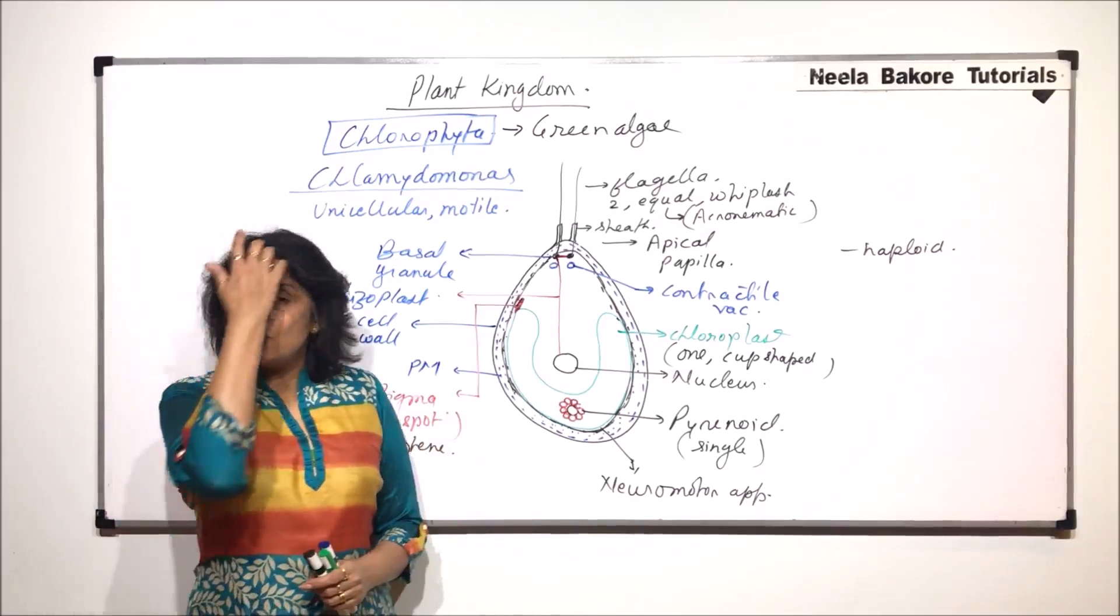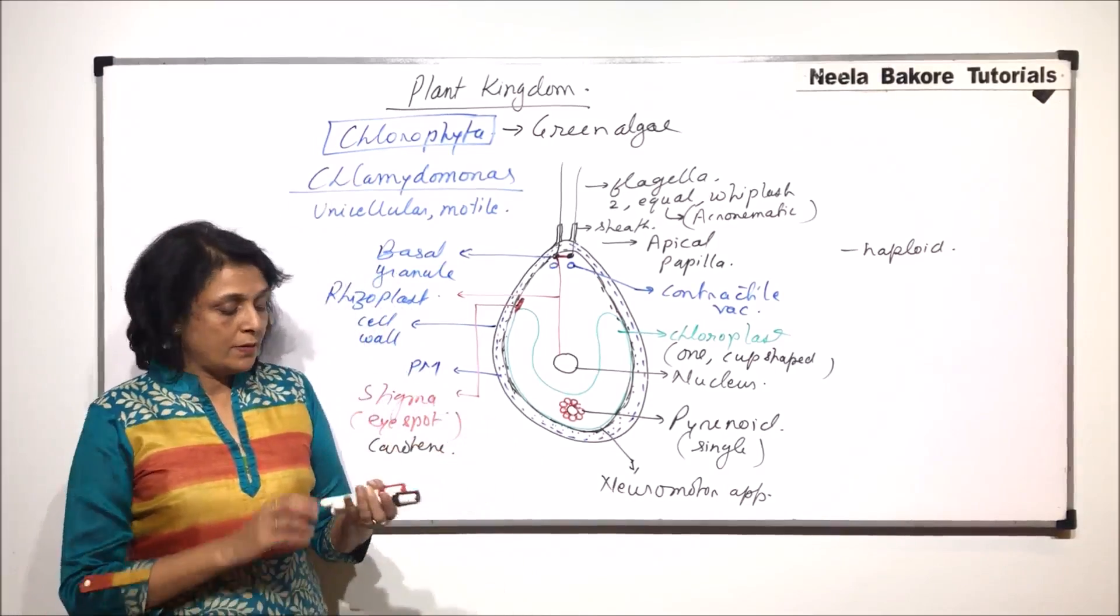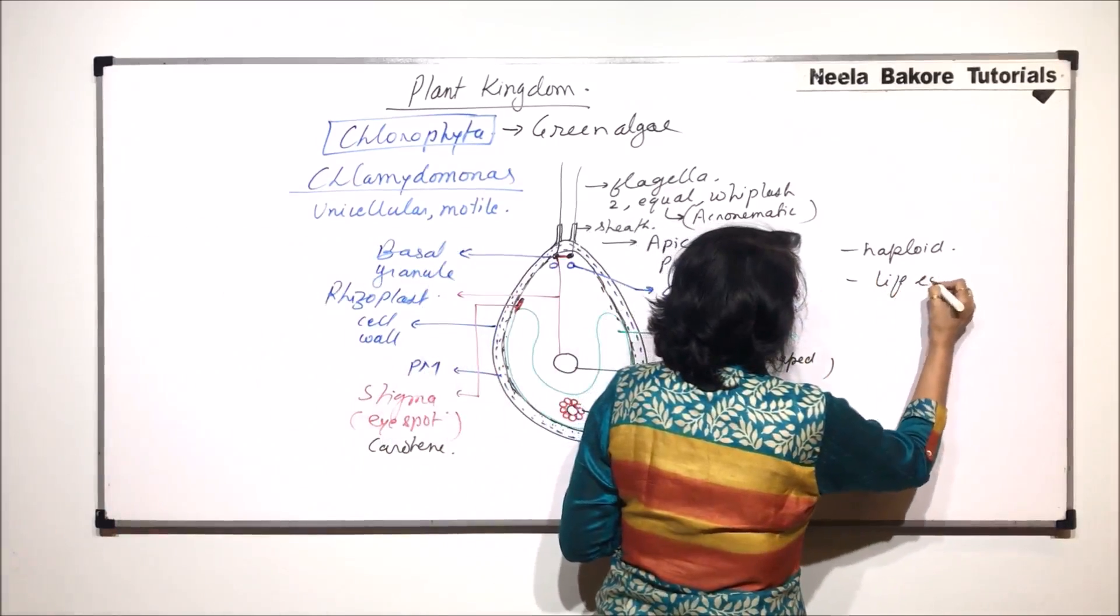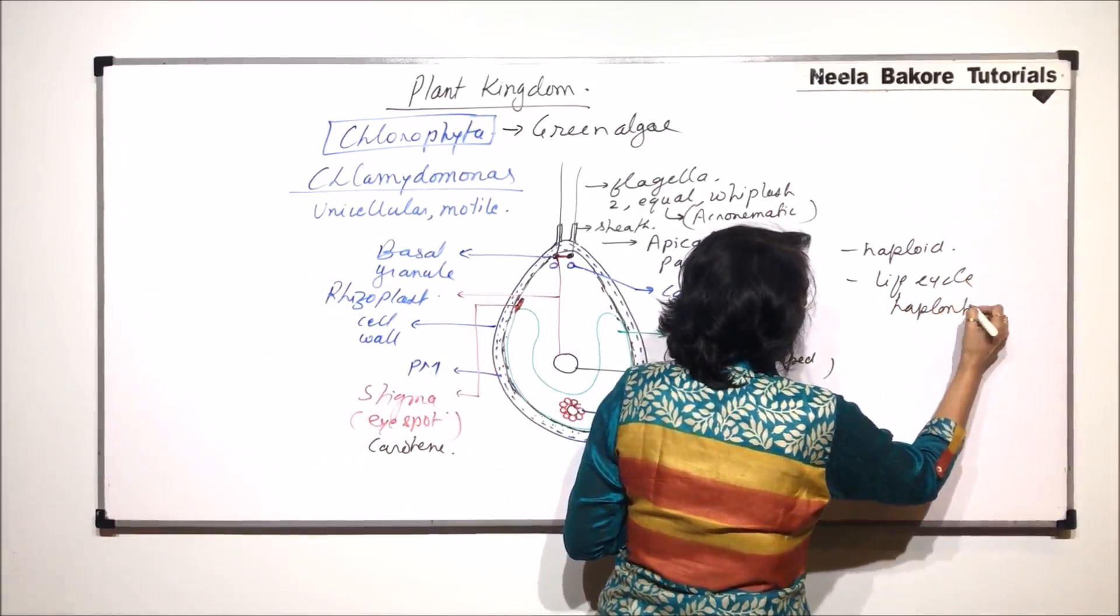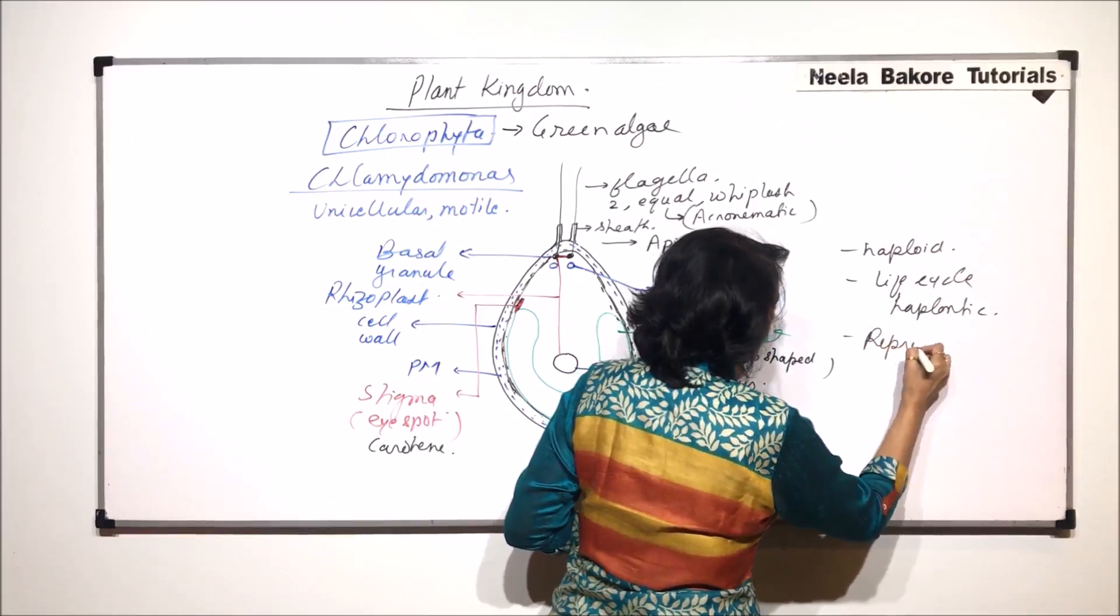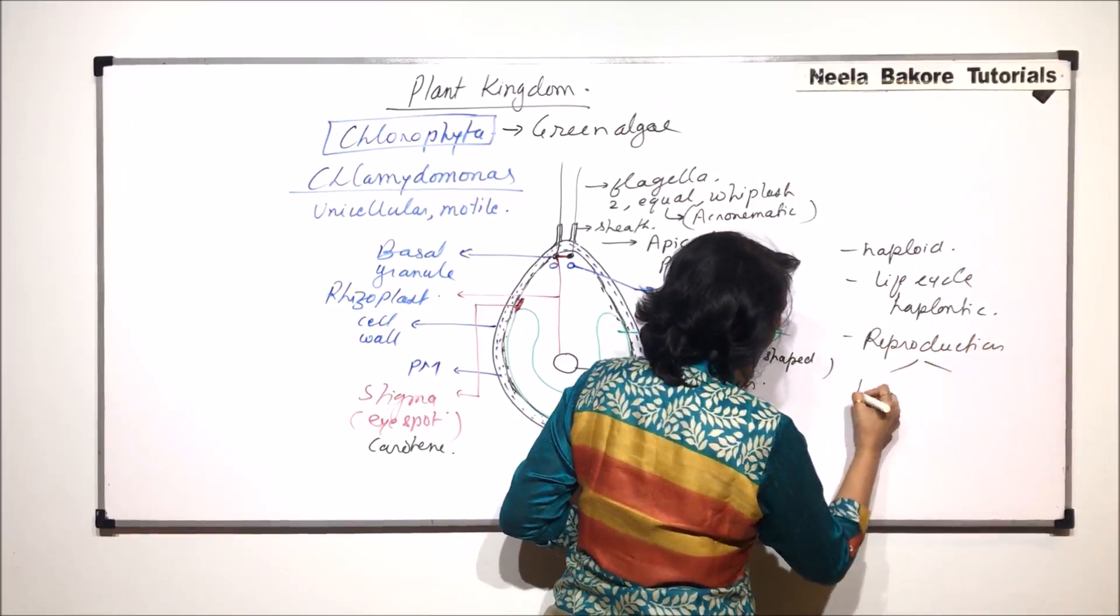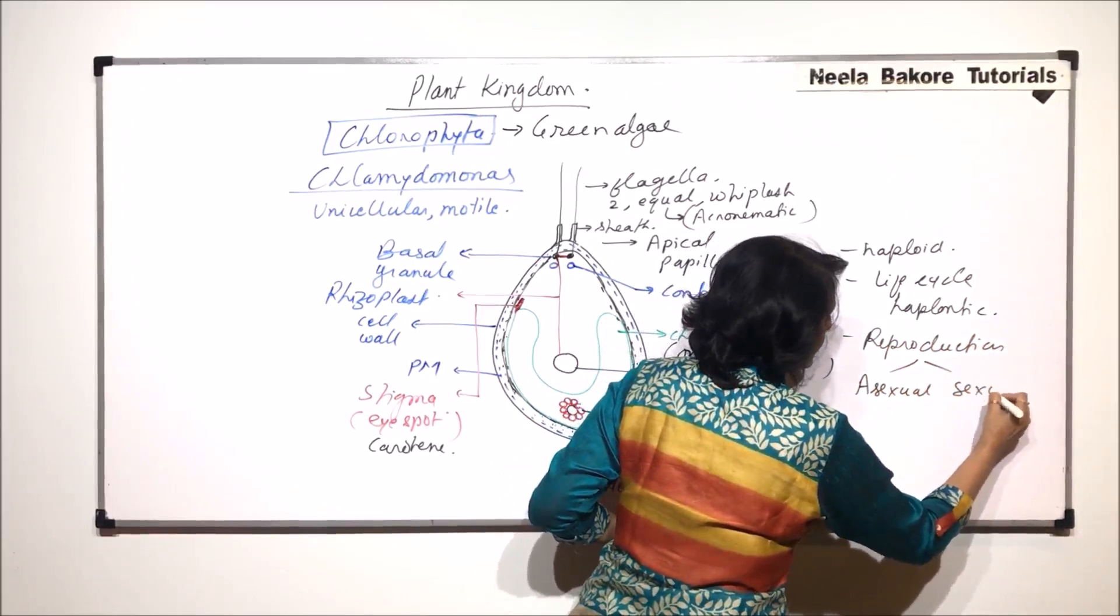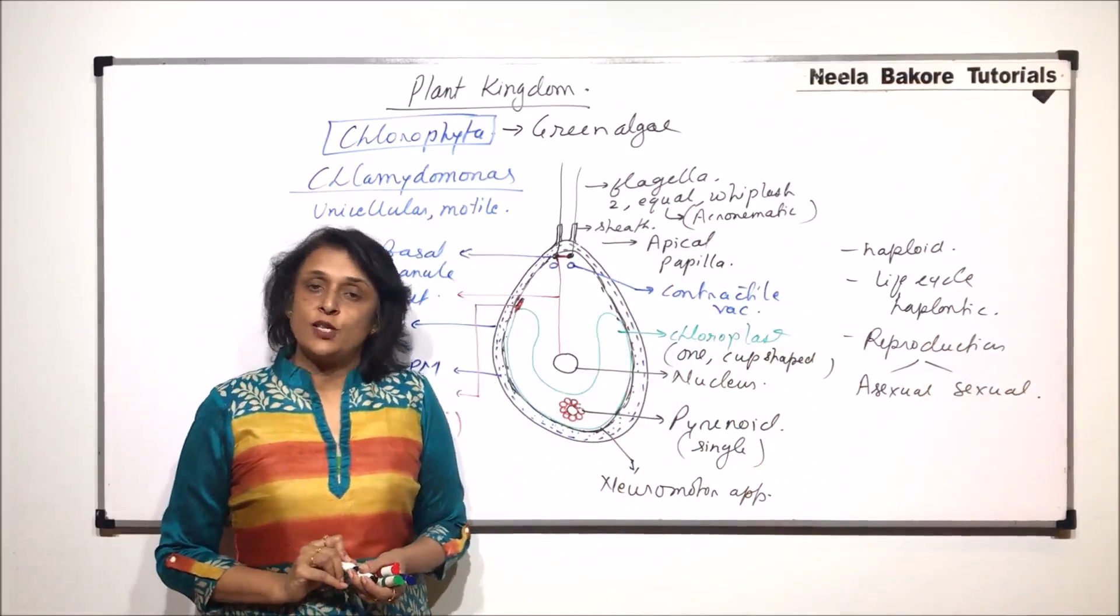This is the simple structure of Chlamidomonas and in the next video we will talk about the life cycle which is haplontic. We would also talk about the reproduction process which takes place both ways, that is asexual as well as sexual reproduction.